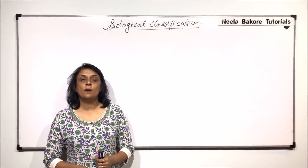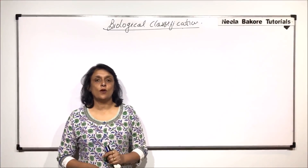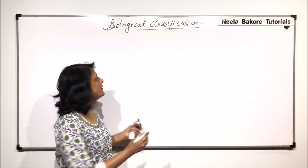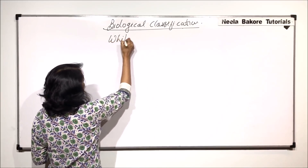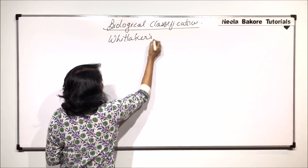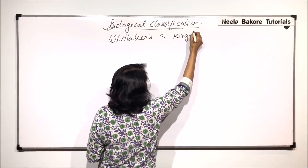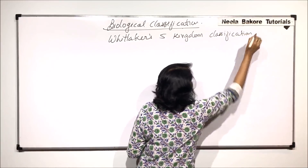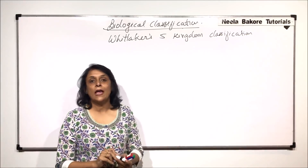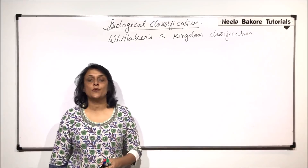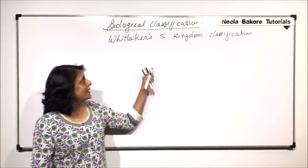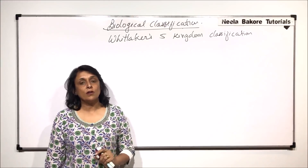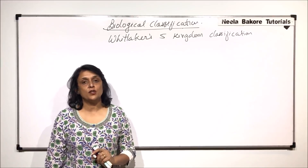In this part, we will talk about the details of Whittaker's classification. The classification given by Whittaker was the Five Kingdom Classification. We have already seen that there were two, three, four, five, and even six kingdom classifications which have been given. So why are we still following this Five Kingdom Classification, and what are the parameters or criteria on which this classification was based?